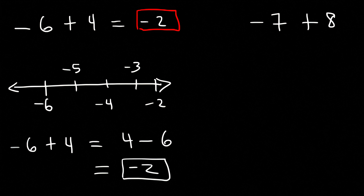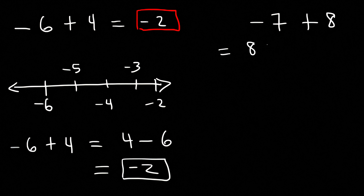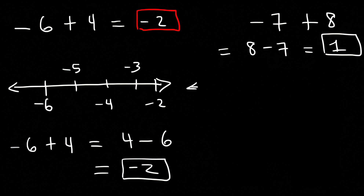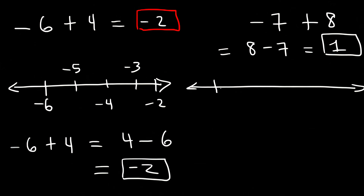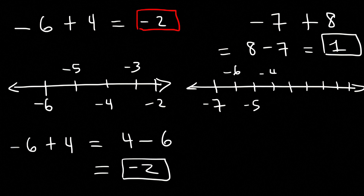What about negative 7 plus 8? That equals 8 minus 7, which is positive 1. Using the number line: start with negative 7 and travel 8 units to the right — negative 6, negative 5, negative 4, negative 3, negative 2, negative 1, 0, positive 1. So negative 7 plus 8 is positive 1.